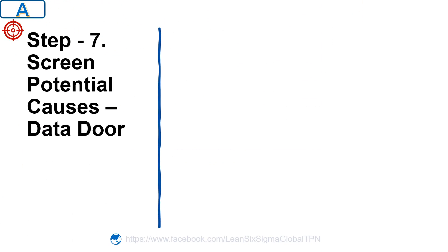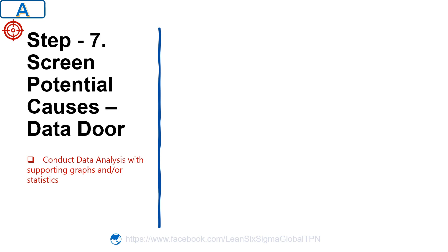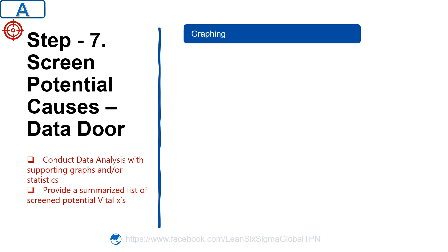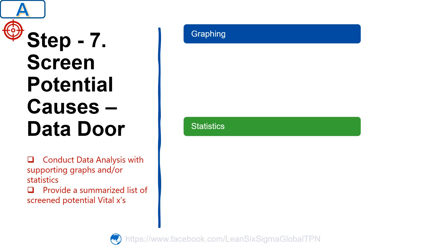The next step is to screen potential causes using data. The purpose is to conduct data analysis with supporting graphs and to provide a summarized list of screened potential X's. In this step, we focus on graphical screening — which factors or inputs appear to influence the output based on graphing and descriptive statistics — and on which factors appear to influence the output based on inferential statistics.